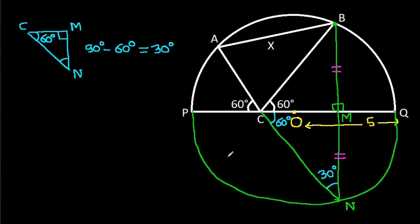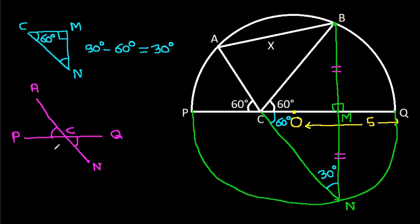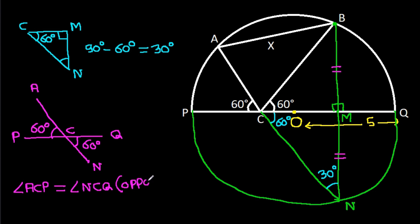We have PQ, and angle ACP is equal to angle NCQ — both are 60 degrees. Angle ACP equals angle NCQ because they are opposite (vertical) angles.